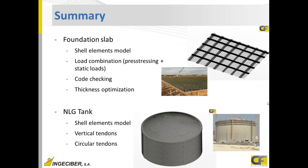The last two examples are a foundation slab modeled with shell elements, where we apply load combinations and code checking and design, obtain needed reinforcement amounts, and compare the same slab with and without tendons to see how tendons reduce passive reinforcement. Finally, there is a natural liquid gas tank, also modeled with shell elements, with two groups of tendons: vertical tendons and circular tendons in all walls of the tank, but no tendons on the dome.